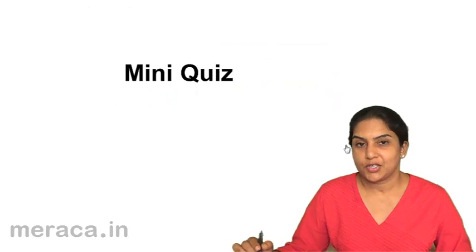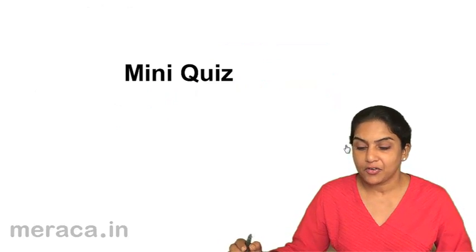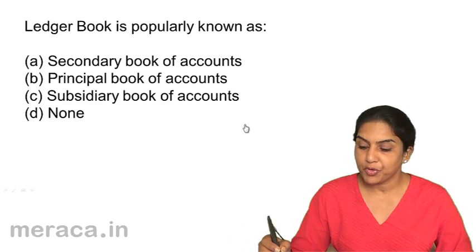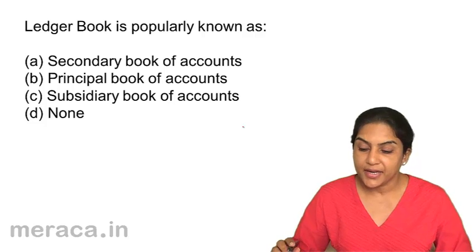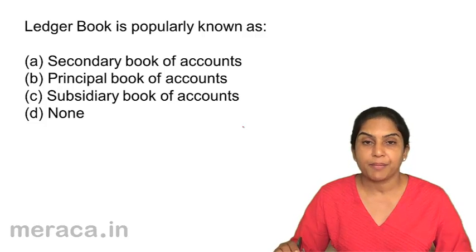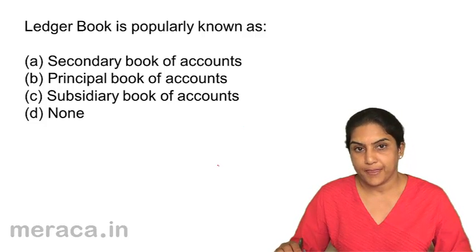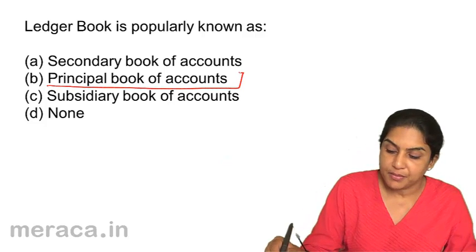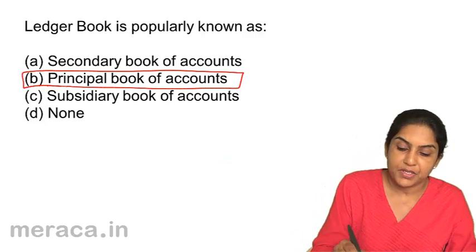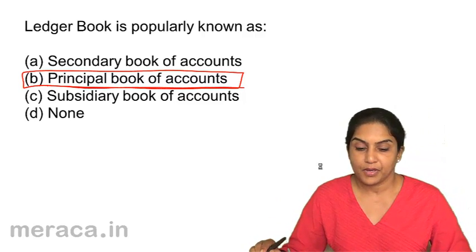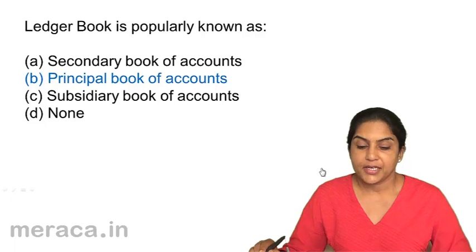Another short quiz to test our understanding of the concept of ledger. Ledger is popularly known as: a secondary book of accounts, principal book of accounts, subsidiary book of accounts, or none of the above. Ledger is known as the principal book of accounts — it is the principal, main book of accounts. Correct answer: B.